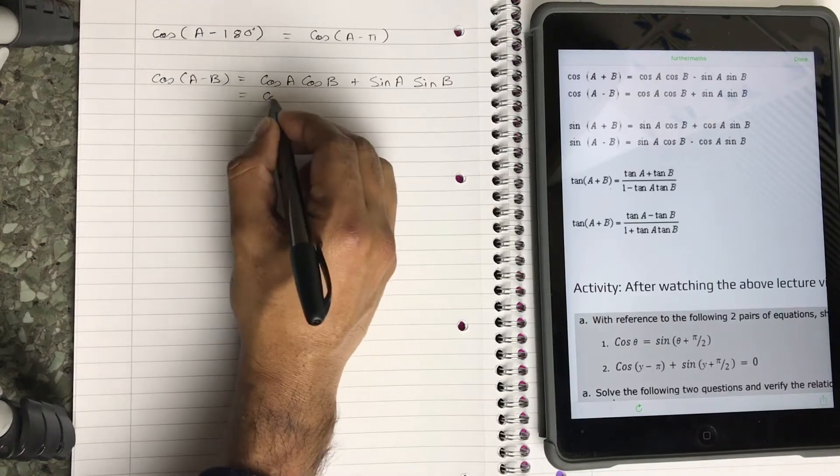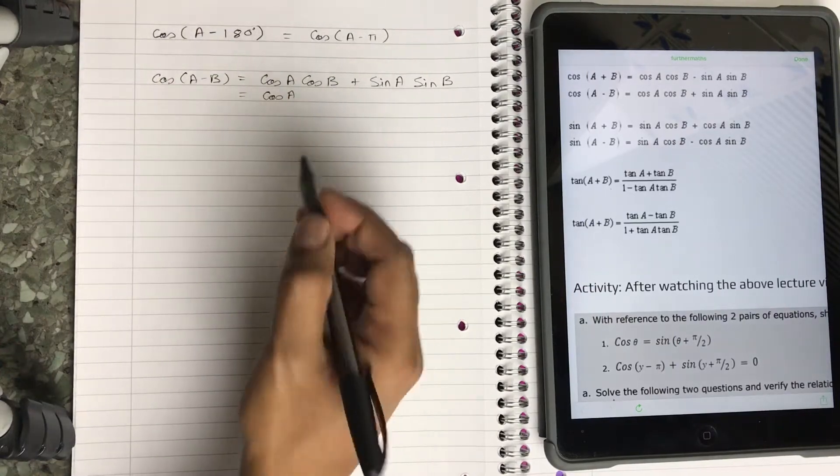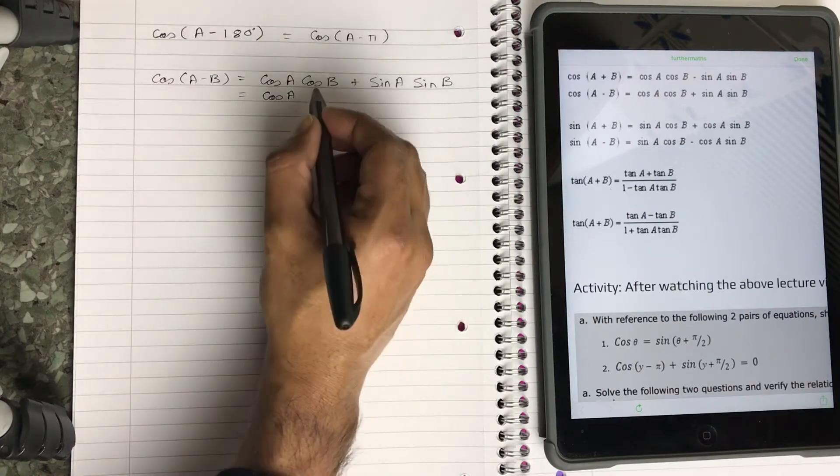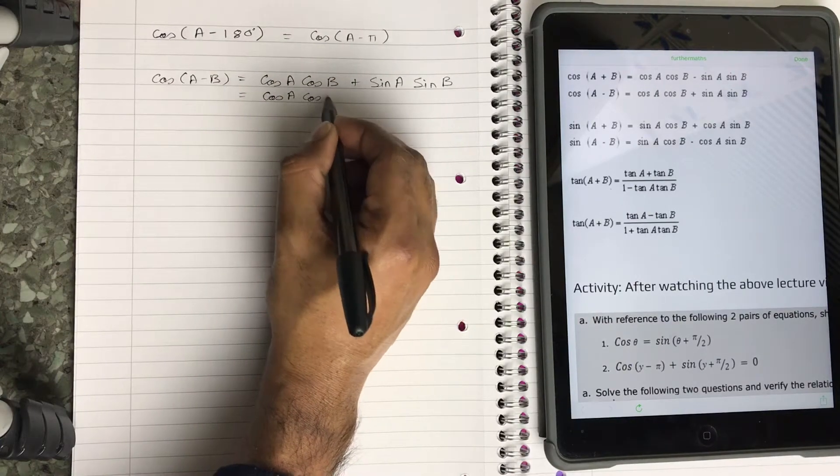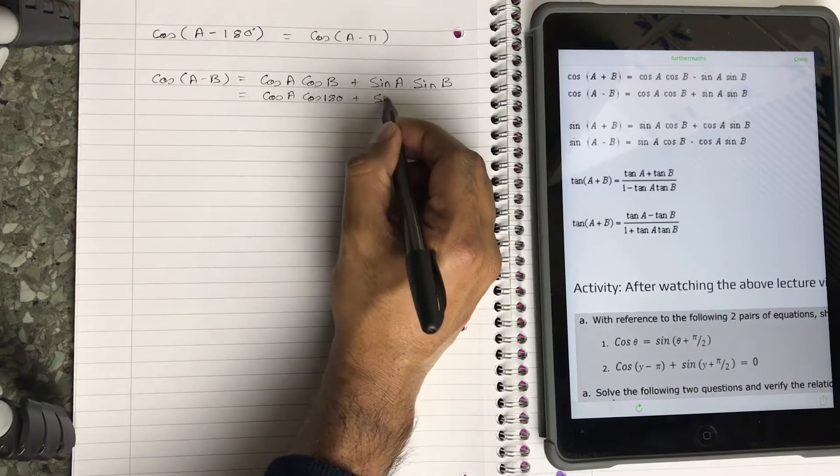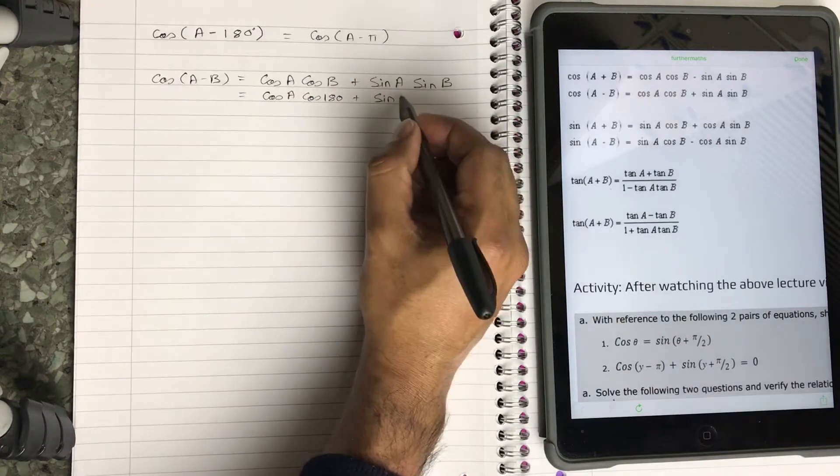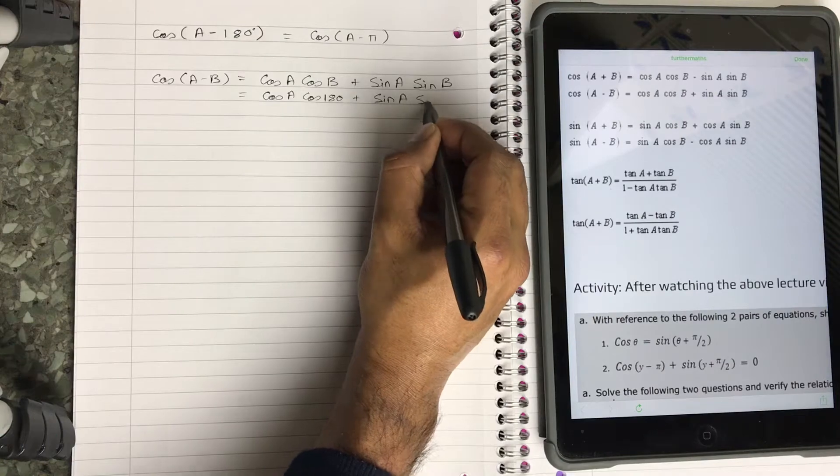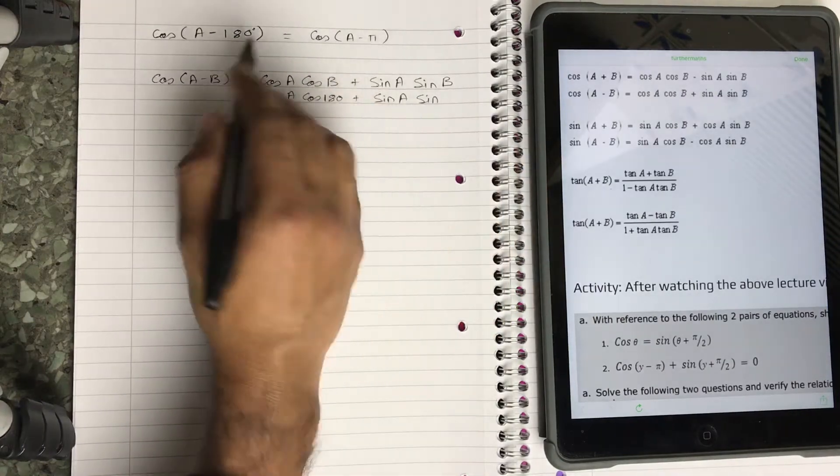Now cos(A) is the same - it's the same thing over here, so cos(A) you can't really reduce it any further. Now B is 180, so cos(180) + sin(A), which is A, and sin(B) is again 180.